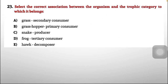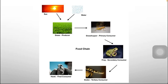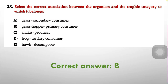Question 23: Select the correct association between the organism and its trophic category. Options: grass-secondary consumer, grasshopper-primary consumer, snake-producer, frog-tertiary consumer, hawk-decomposer. Checking the food chain, at the end when organisms die they become food for decomposers. According to the food chain, option B — grasshopper as primary consumer — is the correct option.